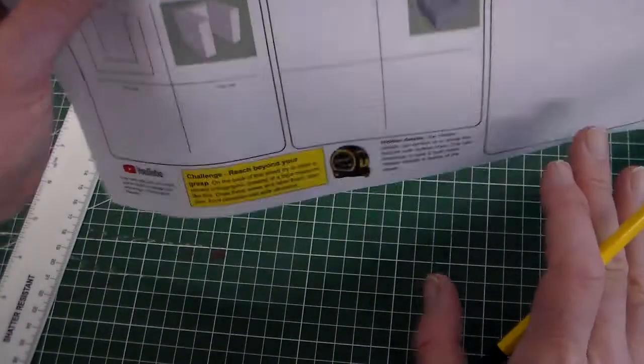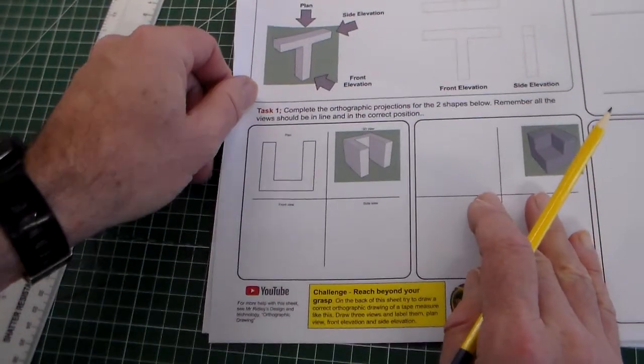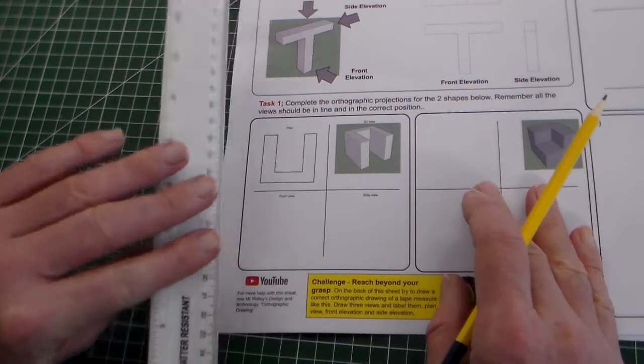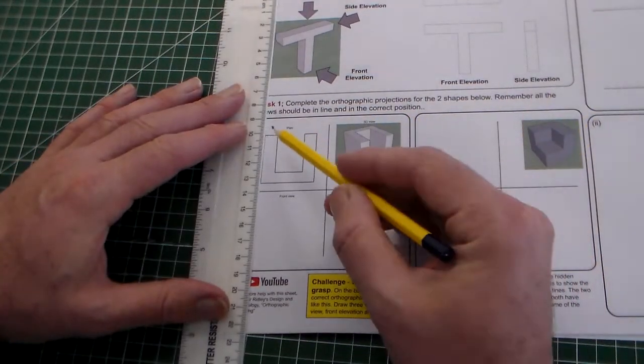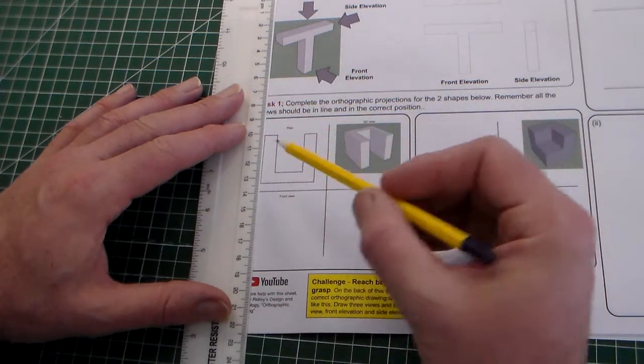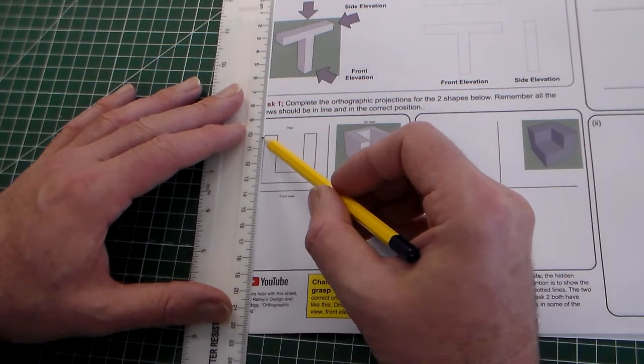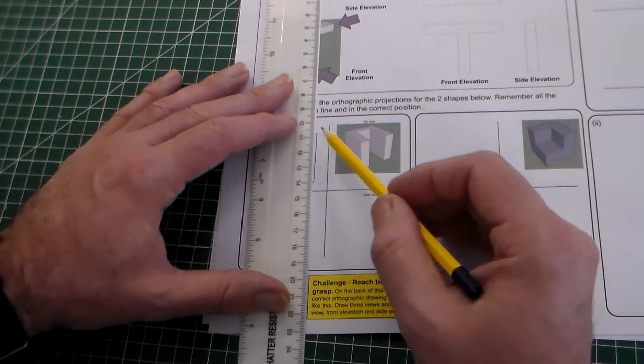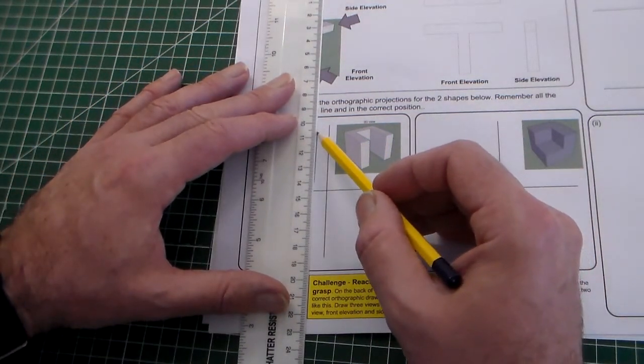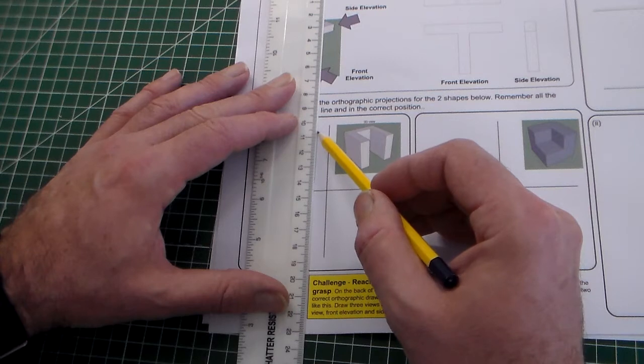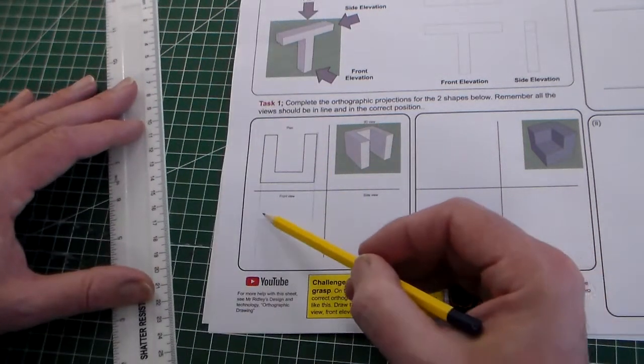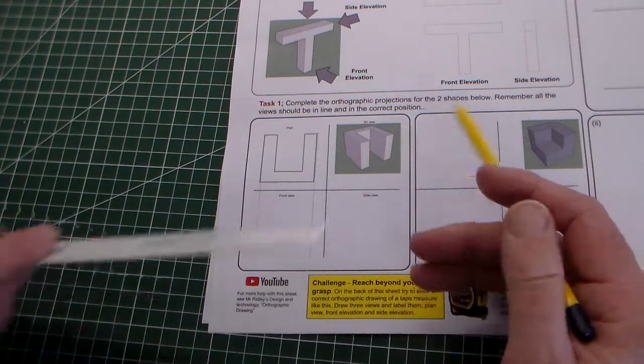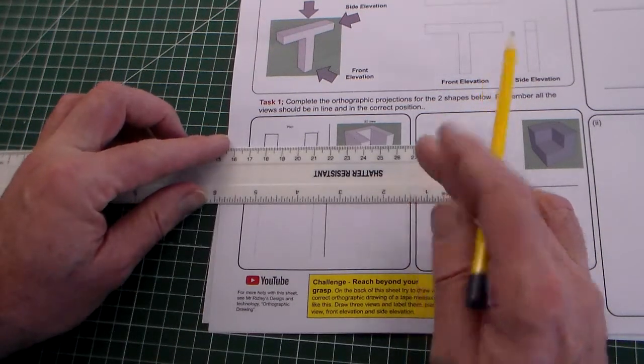So if we take a look at this task 1, what we're going to do, we have construction lines. Construction lines are very light. Now I'm using a pencil here, sometimes I use a fine liner, but I want to show that the construction lines, and I'm going to line this up here, and create, I hope you can see those, two very lightly drawn lines here.